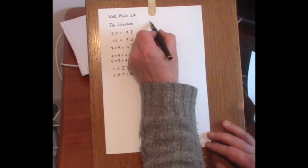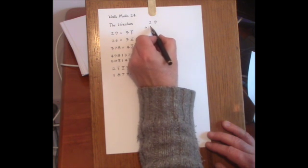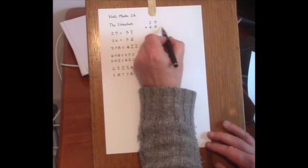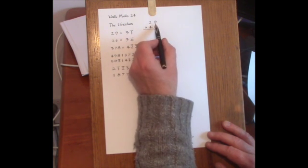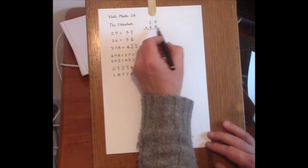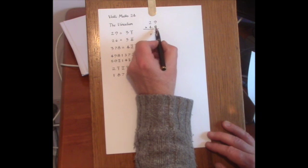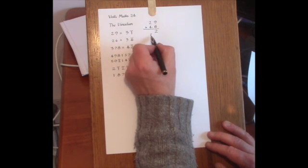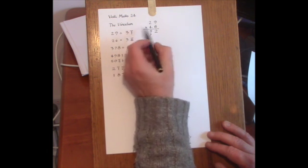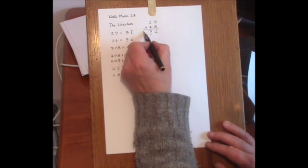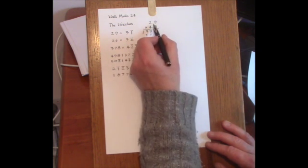So for example, if we want to use vertically and crosswise to multiply 29 by 48, we can do this just with the positive numbers. The calculation would be 8 nines 72, 4 nines are 36, add 16 is 52, add 7 is 59, and then 2 fours 8 plus 5 is 13.